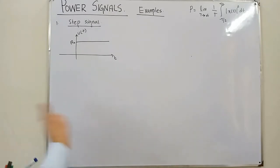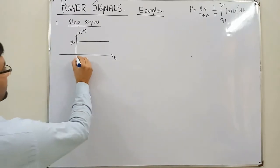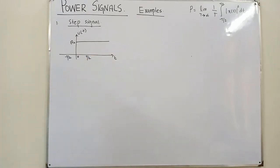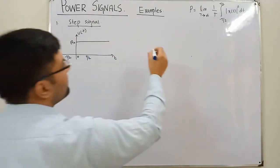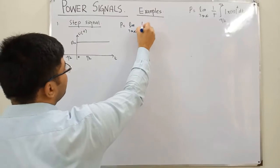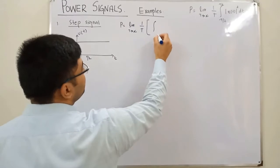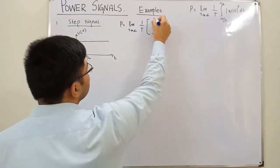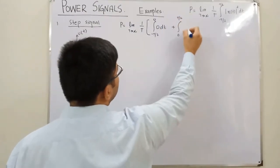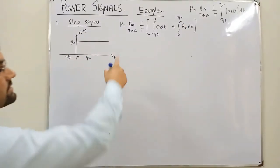We fix the limits at -T/2 and +T/2, with the transition at point 0. So we divide the integration into two parts: from -T/2 to 0 where the function value is 0, and from 0 to +T/2 where the function value is a₀.